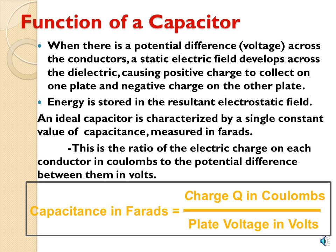An ideal capacitor is characterized by a single constant value of capacitance, measured in Farads. This is the ratio of the electrical charge on each conductor in coulombs to the potential difference between them.